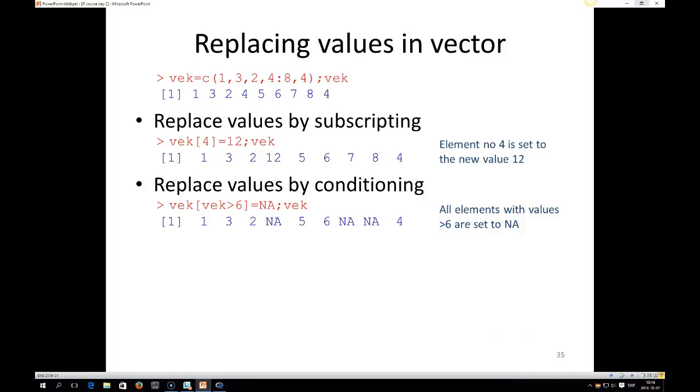Or you could replace these values by conditioning, and then you write like vec, and then you say that vec where vec is bigger than 6 will be equal to NA, and then R will put NA in all the places where all the values have been more than 6.